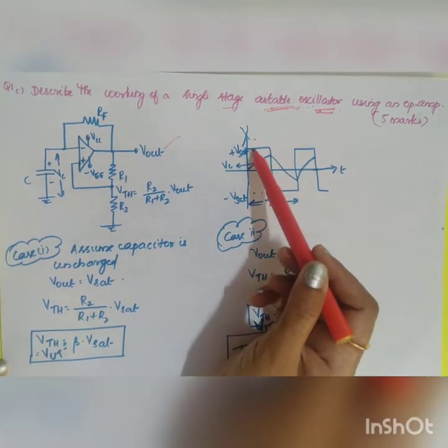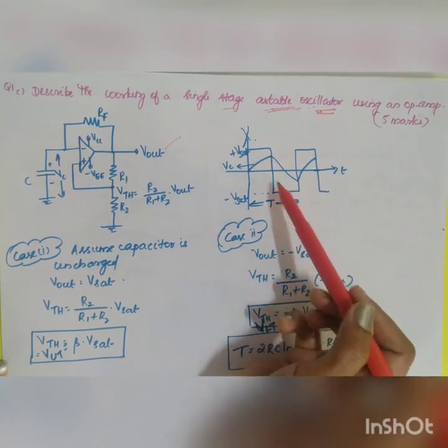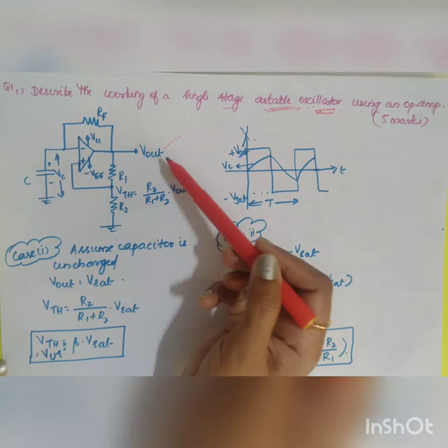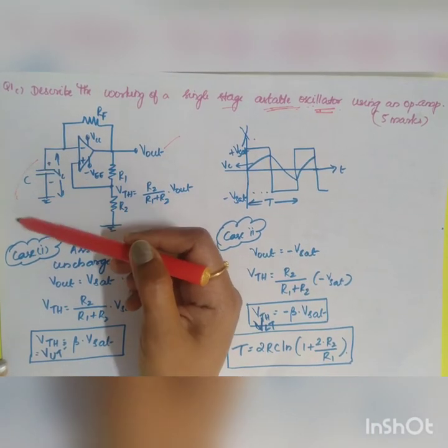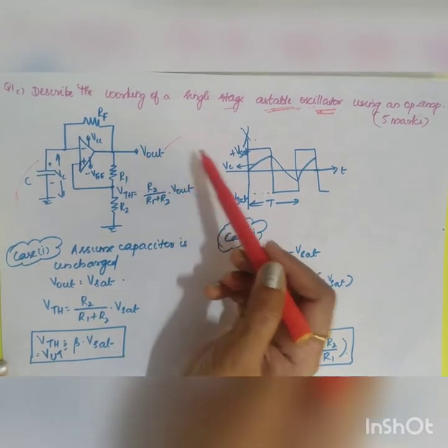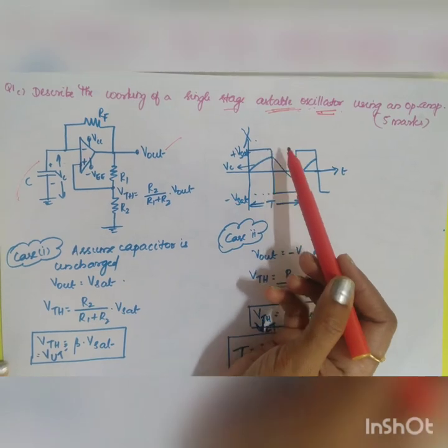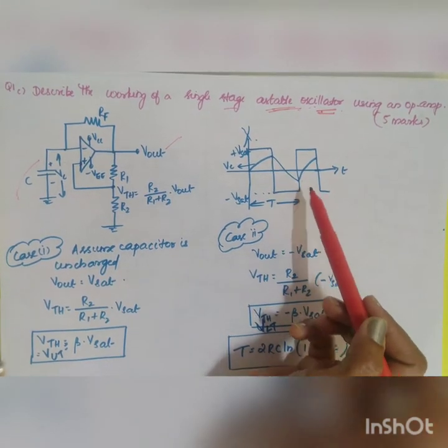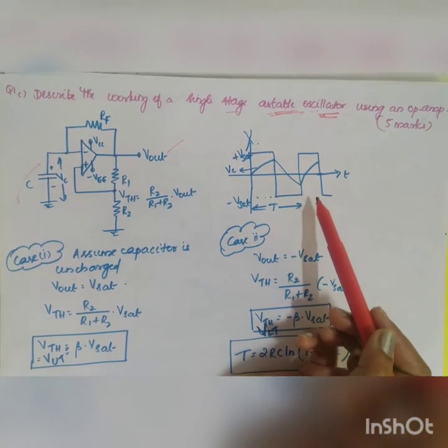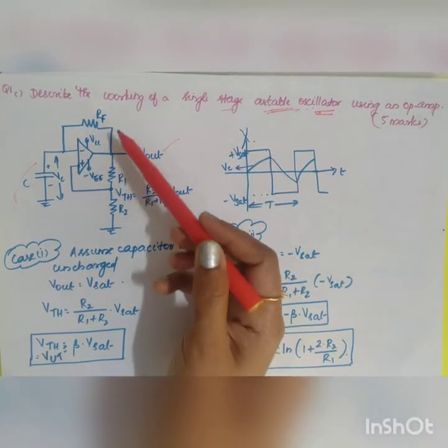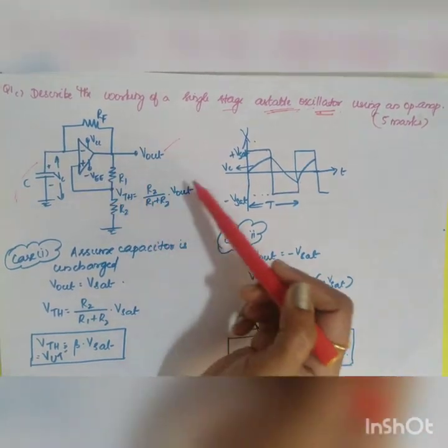How will you get the output signal? Square wave will be obtained due to the charging and discharging of the capacitor. When it is charging you will be getting plus Vsat and when it is discharging it will be maintaining it in minus Vsat. Let us see the diagram.